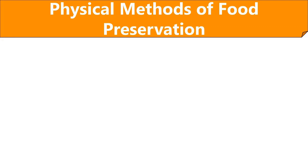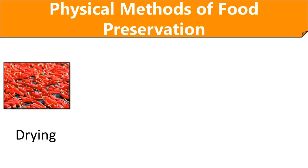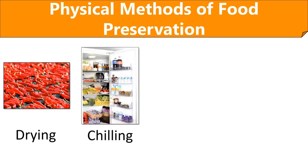Starting with physical methods, drying or dehydration removes moisture within food materials naturally using sunlight. It has been used since ancient times to dry spices, fruits, and vegetables. Nowadays, electric dehydrating machines are also used as an artificial drying method. Chilling or refrigeration is a daily-life example of food preservation, with temperatures of 1 to 4 degrees Celsius preserving food for a few days to weeks.